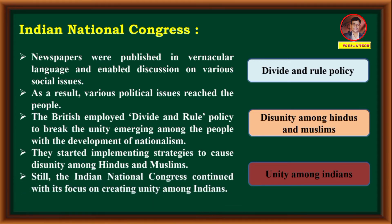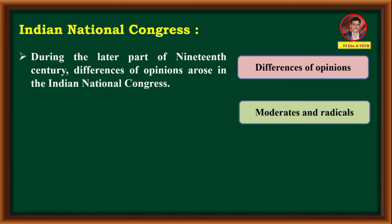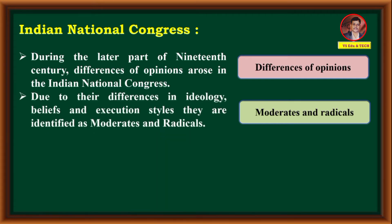In spite of all efforts made by the British, Indian National Congress continued its efforts on creating unity among Indians. But during the later part of the 19th century, differences of opinions arose within the Indian National Congress. Due to differences in ideology, belief, and execution styles, they are identified as moderates and radicals. The Indian National Congress was thus divided into two groups: moderates and radicals.